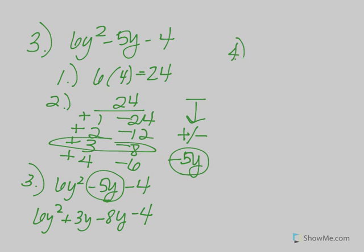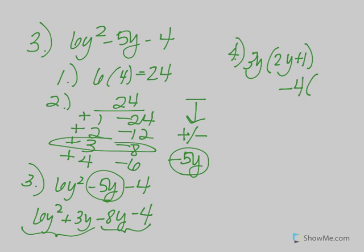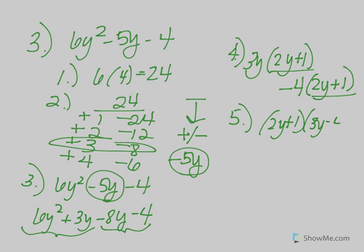Step four: grouping. From the first two terms, pull out 3y, leaving 2y + 1. From the second two terms, both have negatives, so pull out negative 4, leaving positive 2y + 1. Step five: both groups have (2y + 1) — pull that out, and you're left with (3y - 4). Final answer.